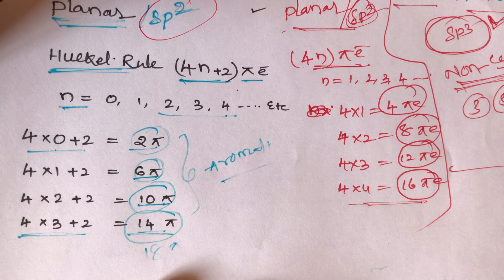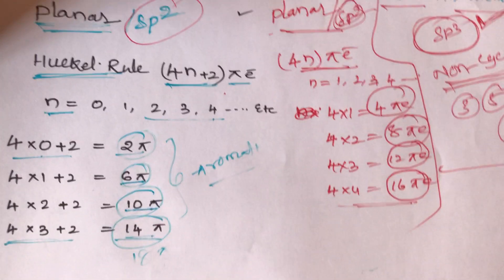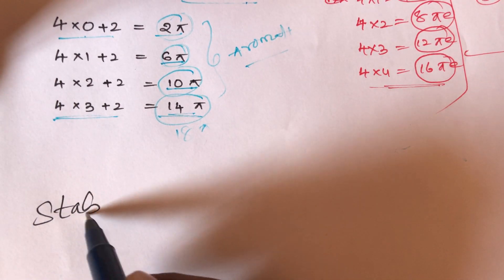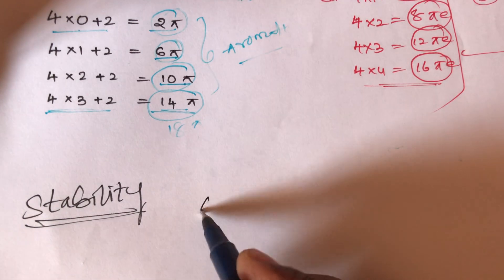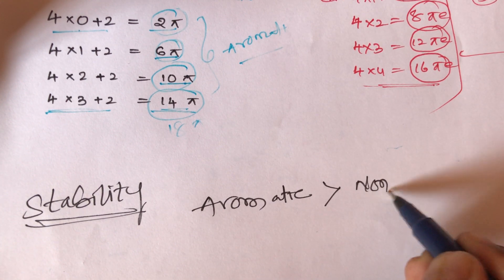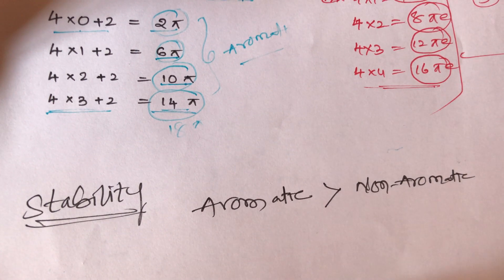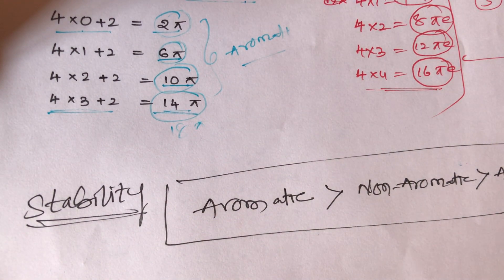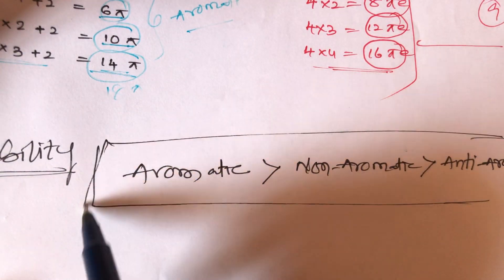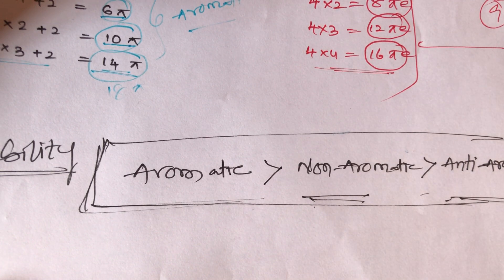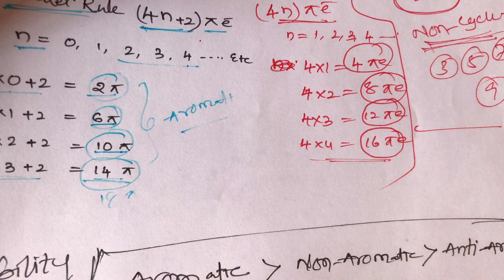Here is a simple trick for identifying these compounds. The stability order is: aromatic compounds are more stable than non-aromatic compounds, and non-aromatic compounds are more stable than anti-aromatic compounds. So the stability order is: aromatic > non-aromatic > anti-aromatic.